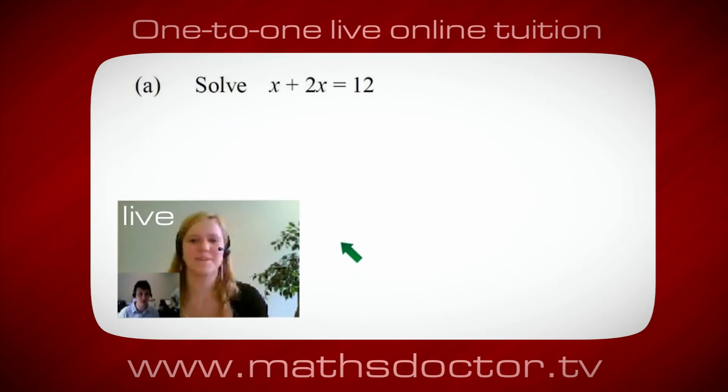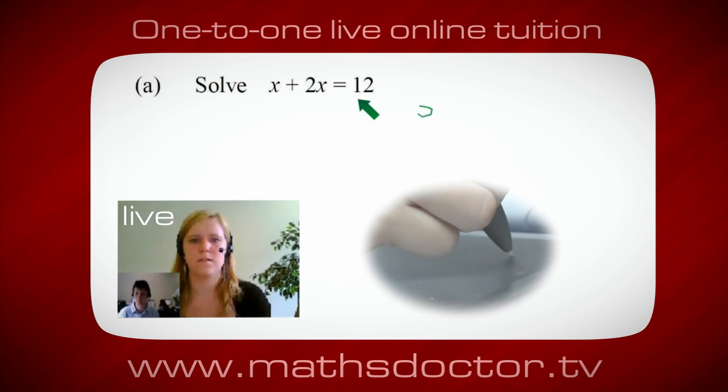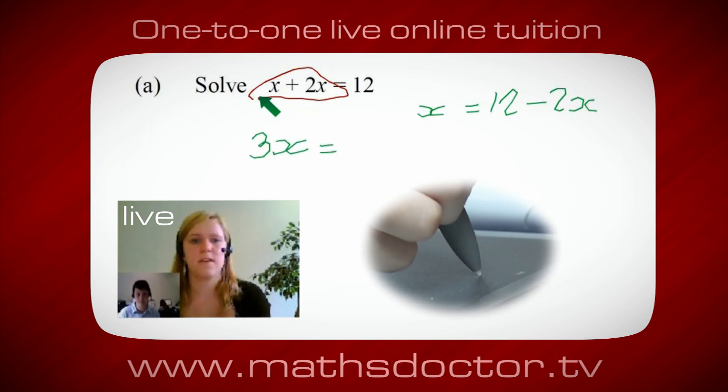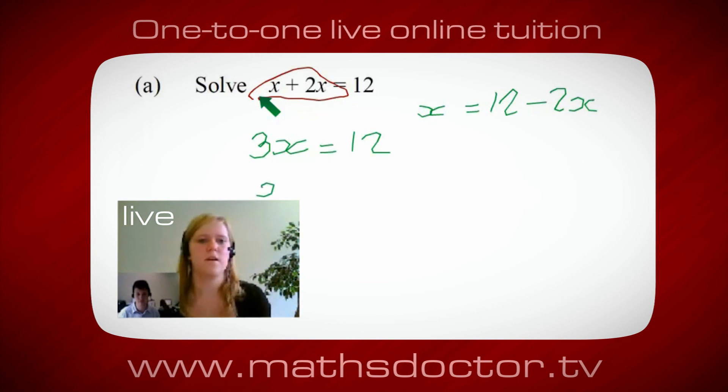Okay, so let's look at this one: solve x + 2x = 12. So what do you think you do first? Well, I want x on its own, so I would put x = 12 - 2x. But what we want to do first is get all of these x's together. Can you see anything we can do? Oh, it's 3x, isn't it? Yeah, absolutely, 3x = 12, so x = 4. Brilliant, spot on, well done.